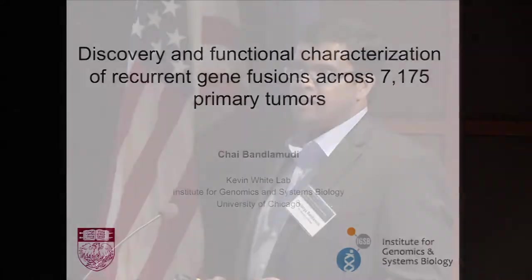Hi, everyone. I'm Chai Banlamoody. I'm a graduate student at Kevin White Lab at the University of Chicago. I want to thank the organizers for giving me an opportunity to present my work. I'm going to talk about the work we've been doing to identify recurrent fusions from the TCGA cohort. The first part of my talk is going to be on the approach we take to identify these fusions, and then I'm going to talk about some of the results and end up with some of the functional validations.